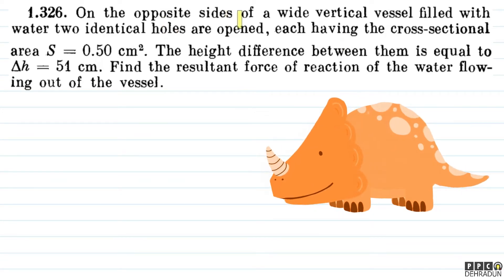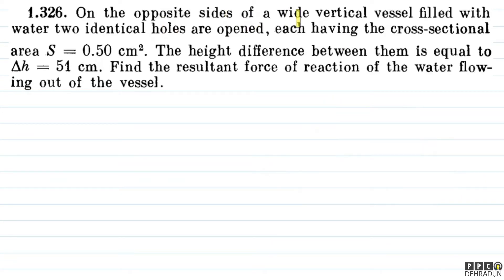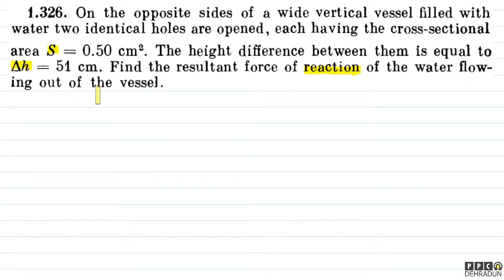The question says: on the opposite sides of a wide vertical vessel filled with water, two identical holes are opened, each having the cross-sectional area S = 0.5 cm². The height difference between them is delta H = 51 cm. Find the resultant force of reaction of the water flowing out of the vessel.